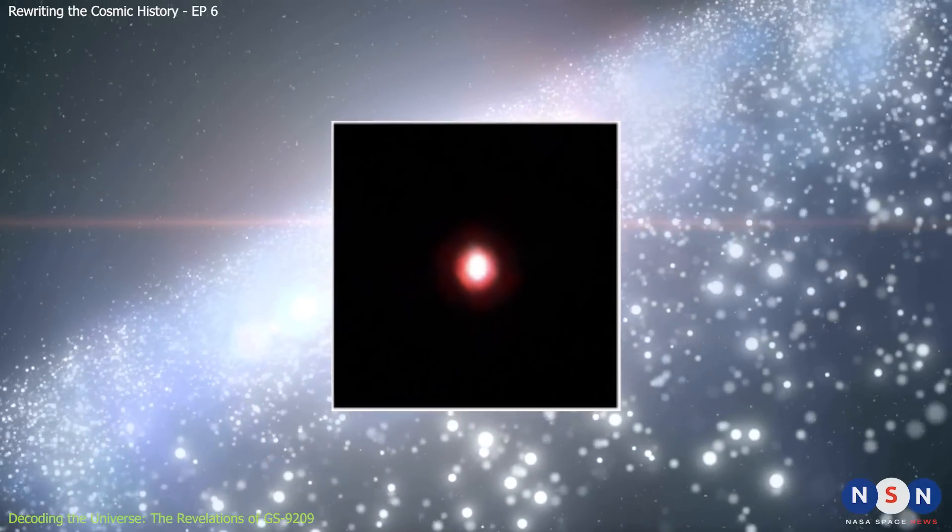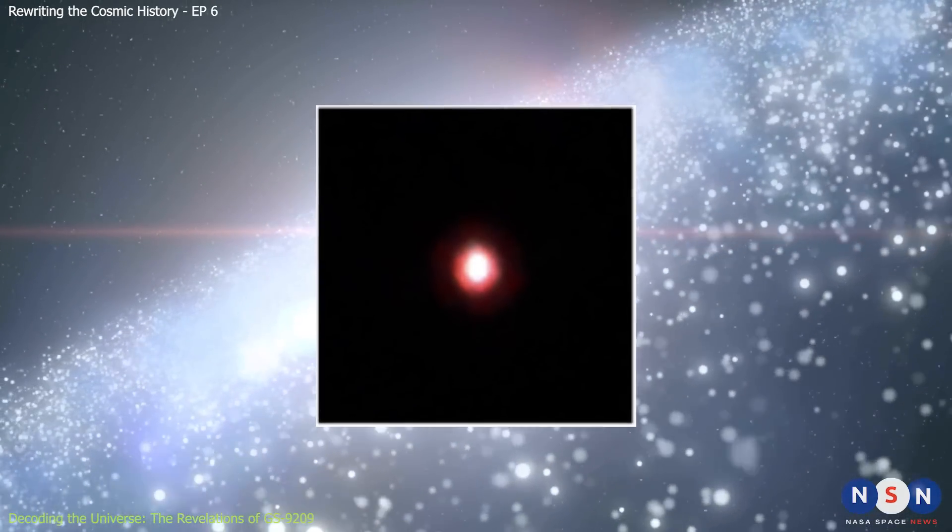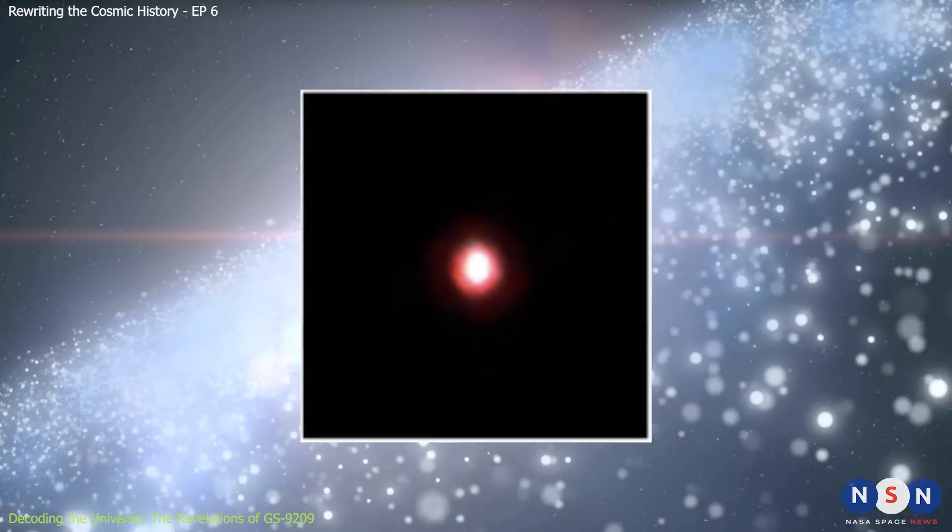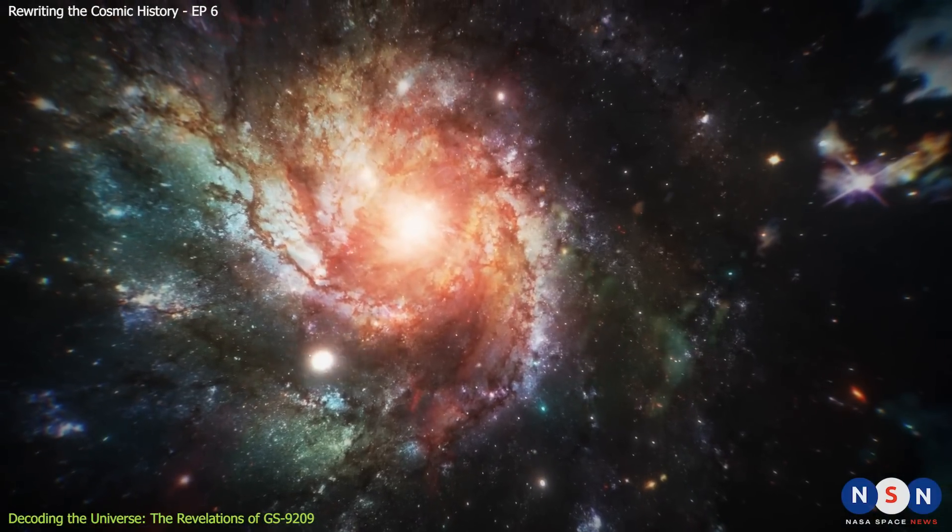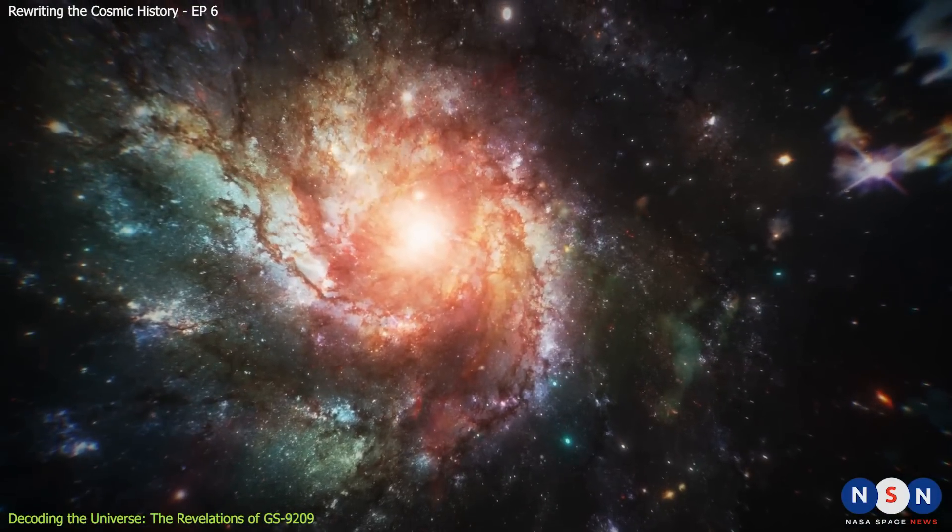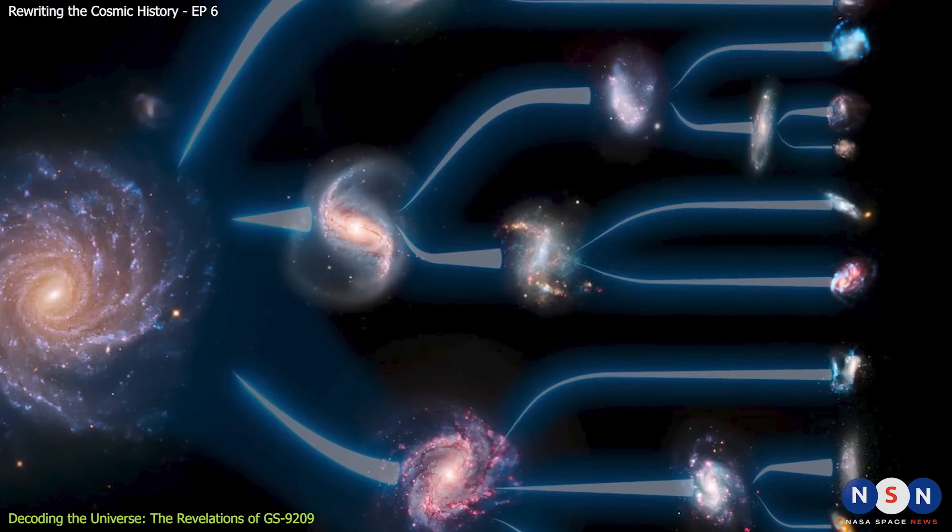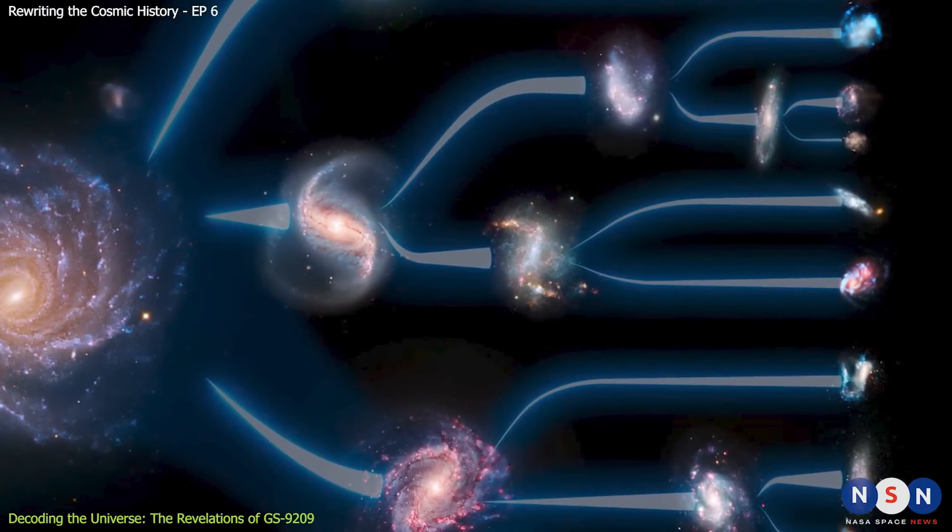So what does a galaxy like GS 9209 tell us about the universe? Well, a lot actually. GS 9209 is not just a galaxy, it is a window to the past. It shows us how galaxies formed and evolved in the early universe, and how they interacted with their environment and their supermassive black holes.